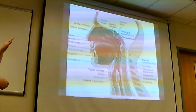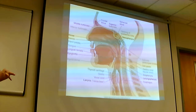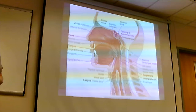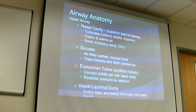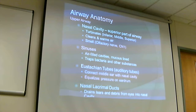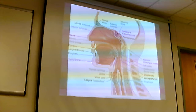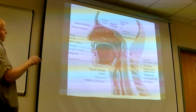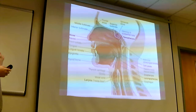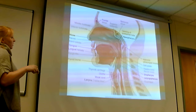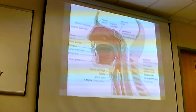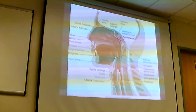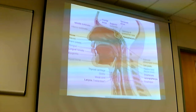Now the upper airway. The nasal cavity is the superior part of the airway. Inside are turbinates — little bony structures with lots of capillaries that separate the nasal cavity into three parts: inferior, middle, and superior turbinate. They cause turbulent airflow to warm the incoming air so cold air doesn't reach the lungs. They also produce mucus that helps clean debris from inhaled air. The olfactory nerves — cranial nerve one — are also located here, producing the sense of smell.